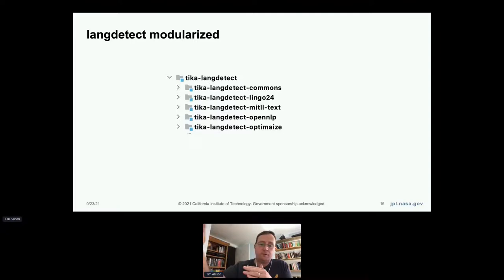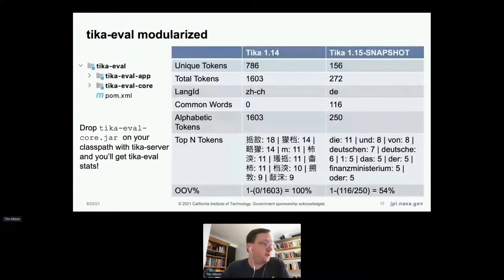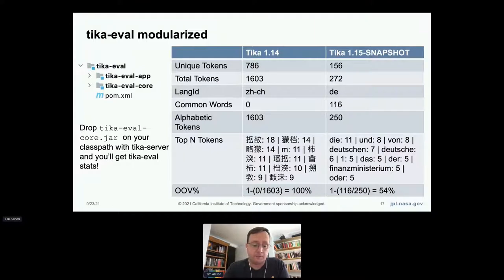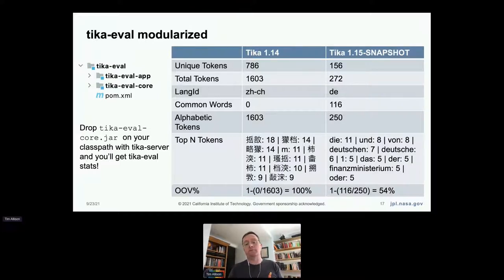We've also modularized the language detects so you don't have to pull in all dependencies for all language detectors if you only want one. We also modularized Tika eval, which lets you evaluate the content extracted from files. It gives you total tokens, total alphabetic tokens, runs language ID on the extracted text, and counts common words. We took the top 20,000 most common words from about 120 languages and calculate the ratio of how many words were extracted for that detected language versus how many were not in the common words list.